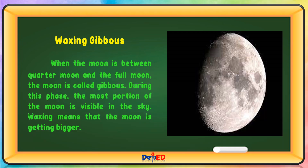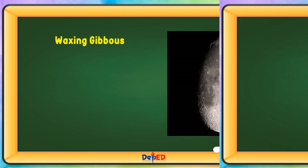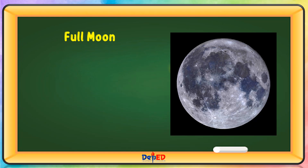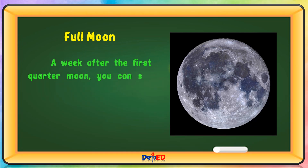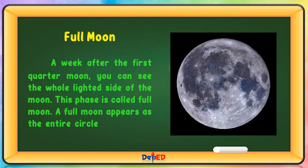Full Moon — A week after the first quarter moon, you can see the whole lighted side of the Moon. This phase is called full moon. A full moon appears as the entire circle in the night sky.